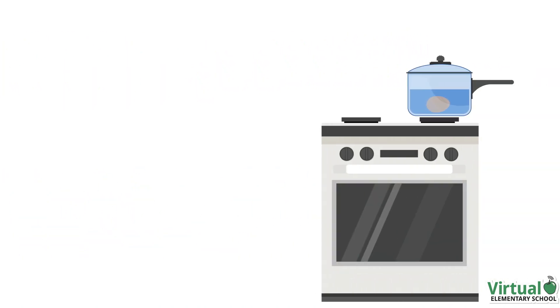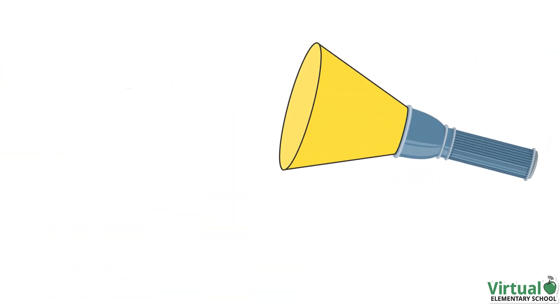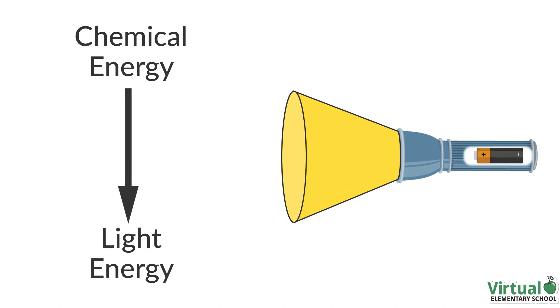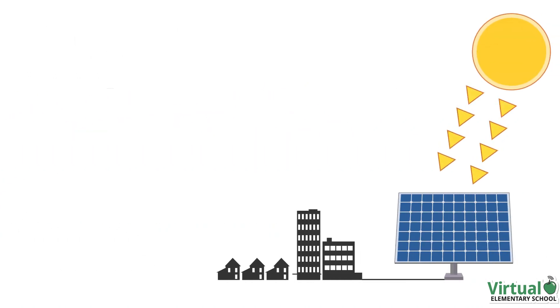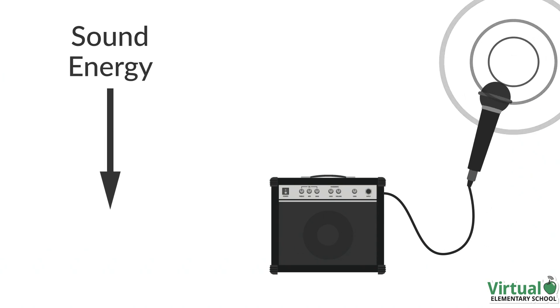A stove transforms electrical energy into heat energy to cook food. A flashlight transforms chemical energy from its battery into light energy. A solar panel transforms light energy from the sun into electrical energy.